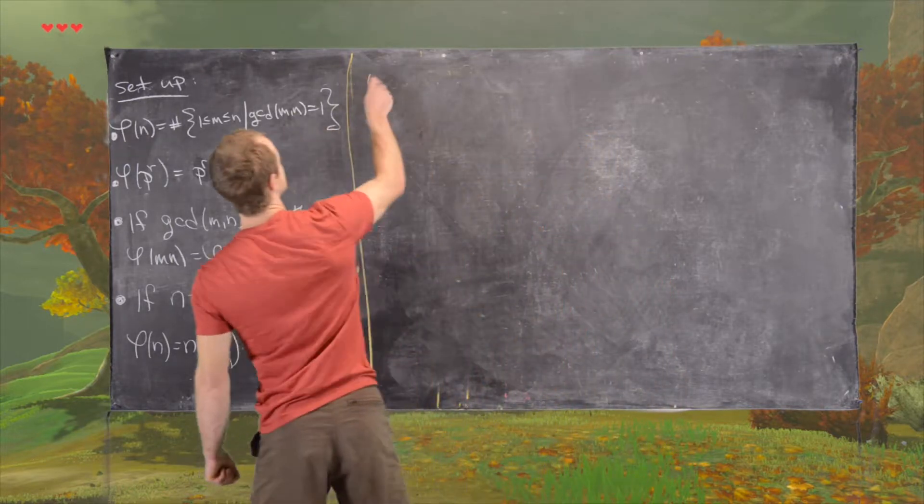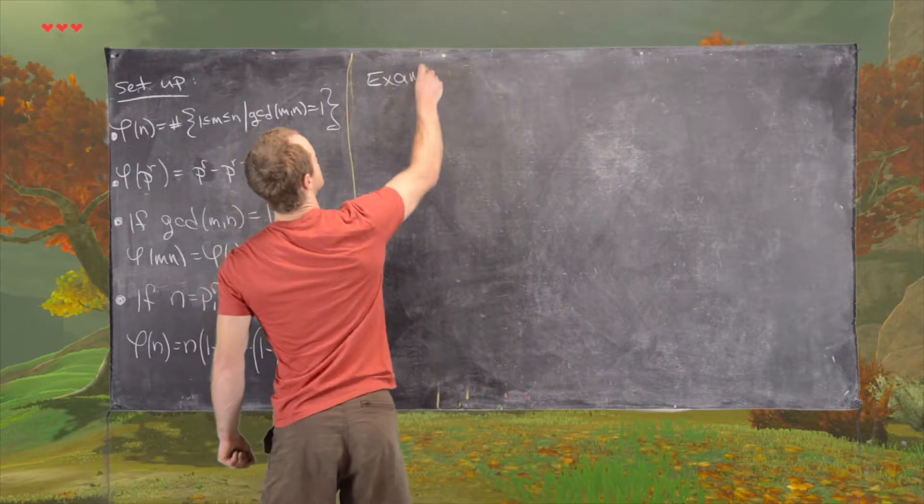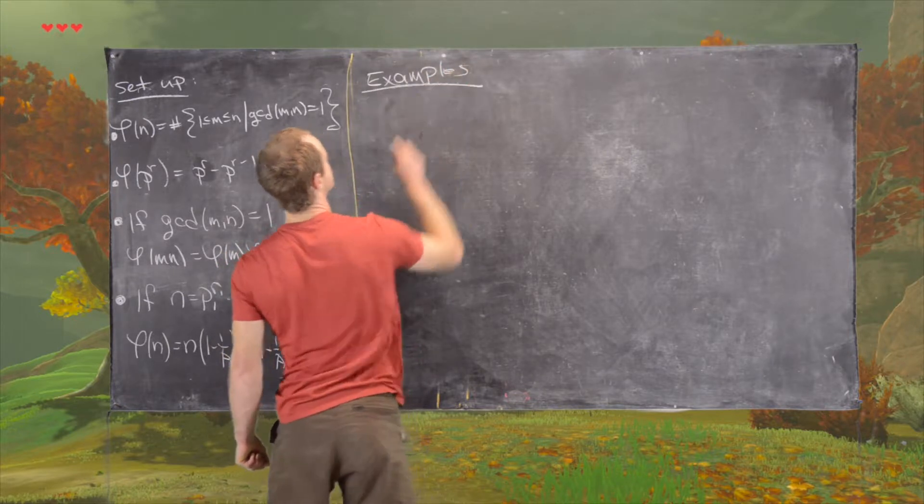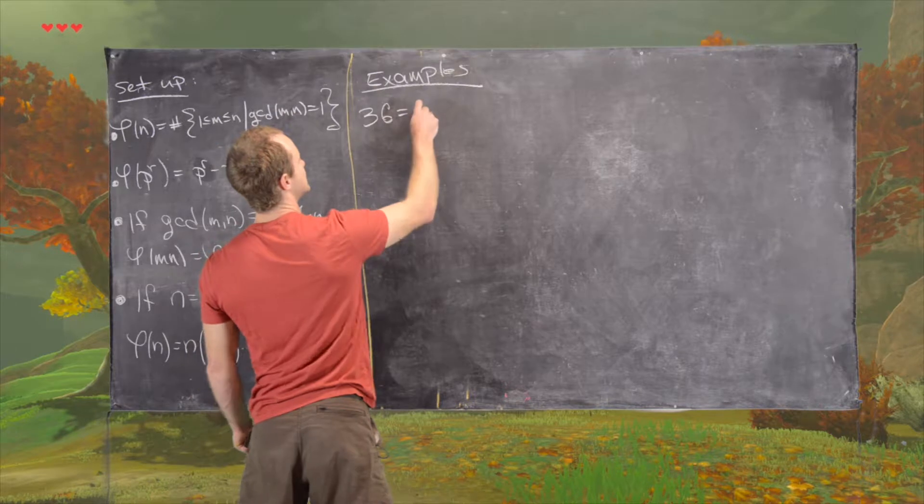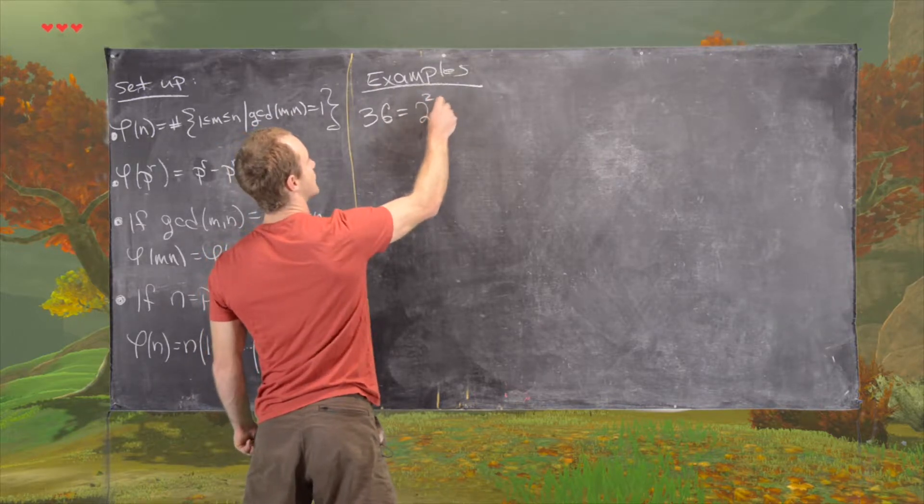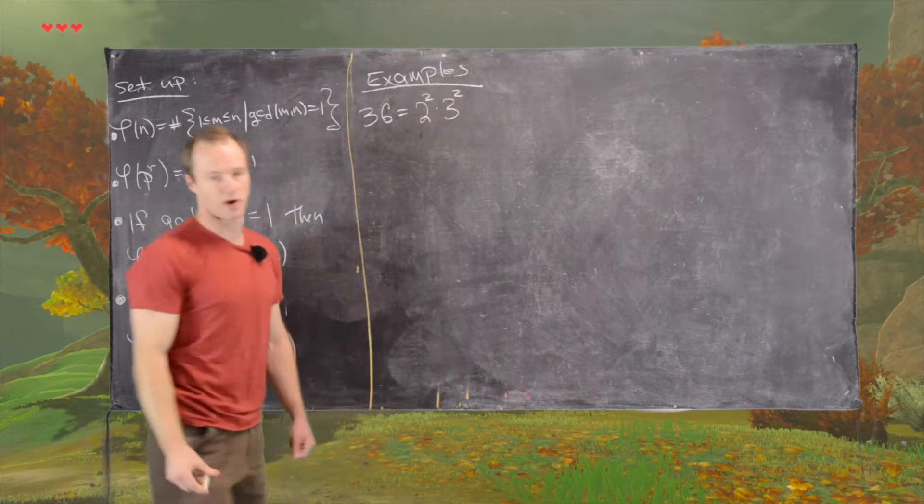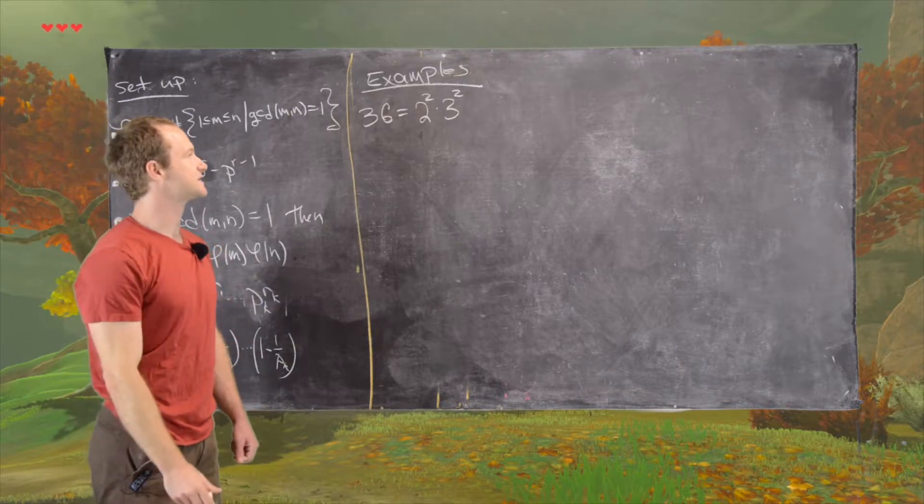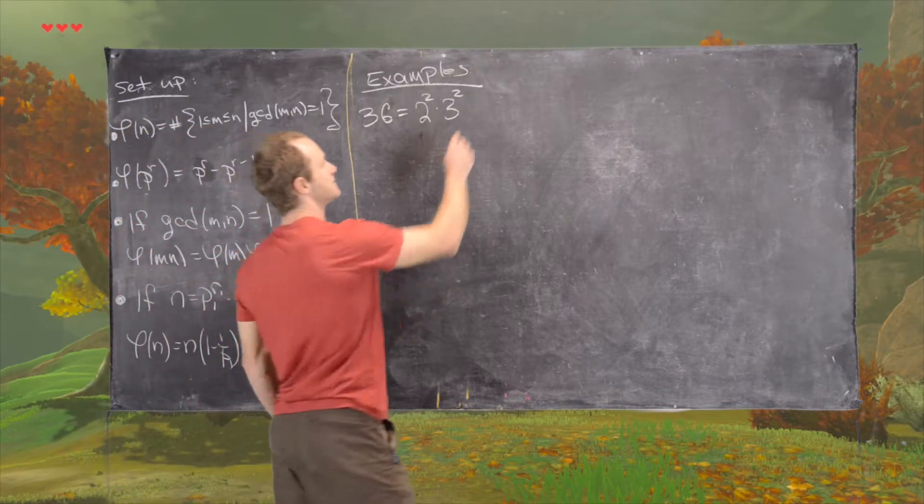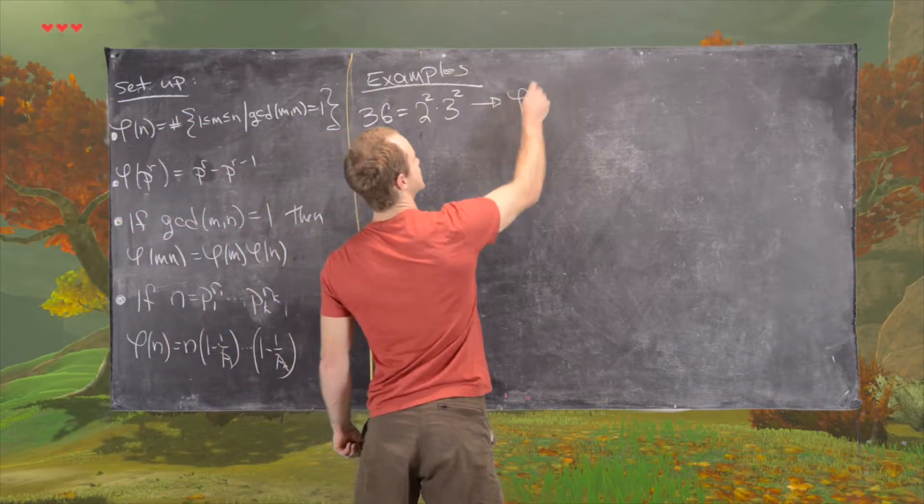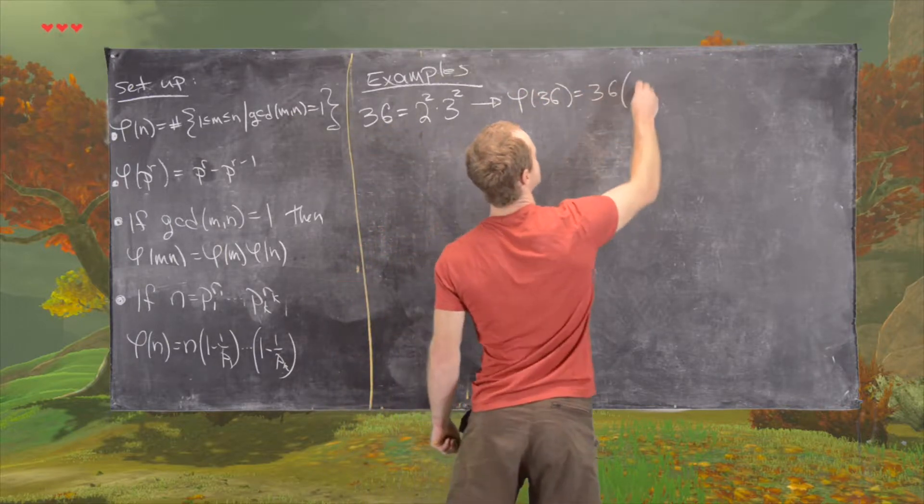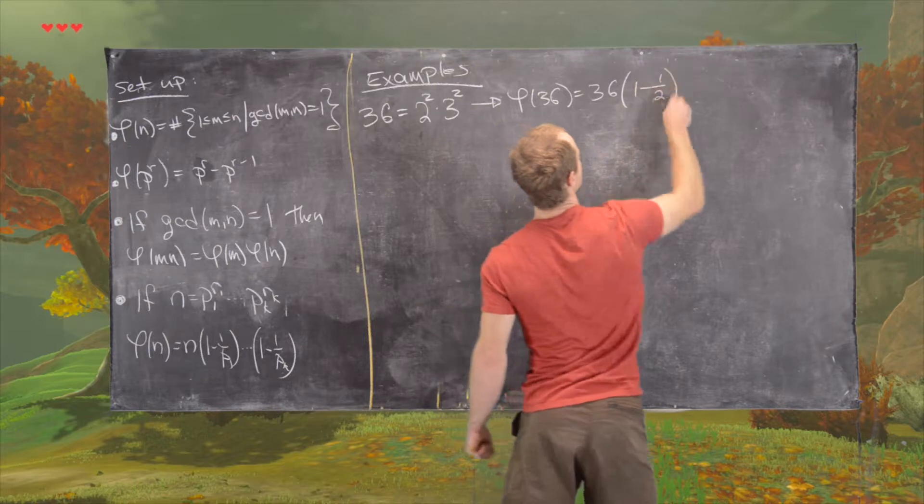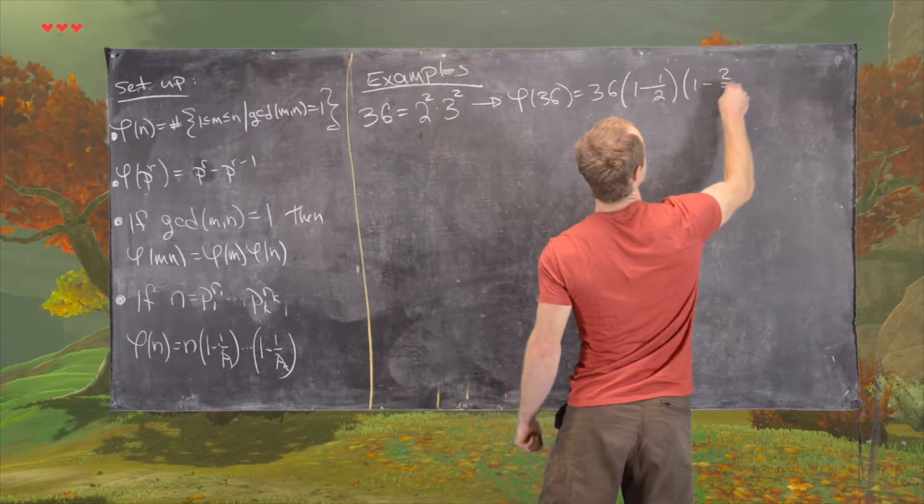So let's look at some examples. First we'll use 36, and so that's easy because we can write down its prime factorization very quickly. So it's 2 squared times 3 squared. And so that tells us that phi of 36 equals 36 times 1 minus half and then 1 minus 2 thirds.